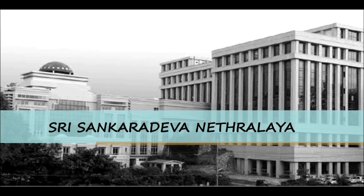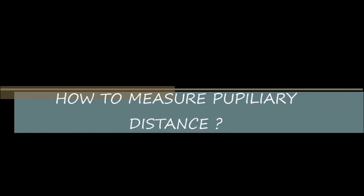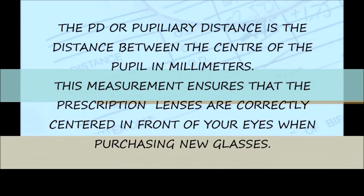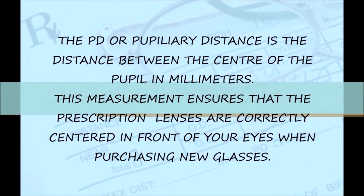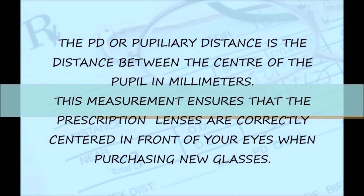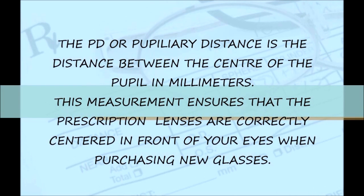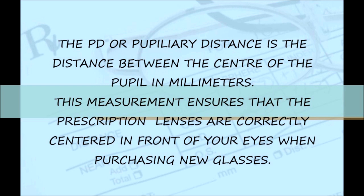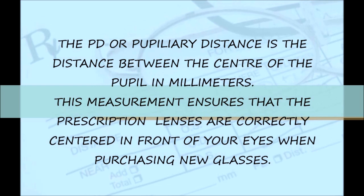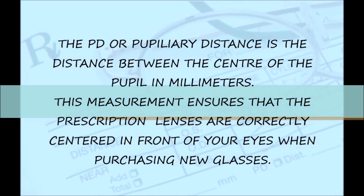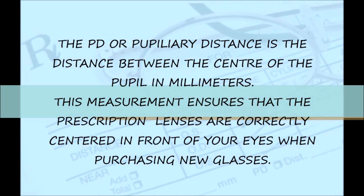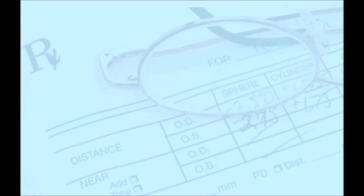Hello everyone. In this video, we are going to show you the different ways of measuring a pupillary distance. The PD, or pupillary distance, is defined as the distance between the center of the pupils in millimeters. This measurement ensures that the prescription lenses are correctly centered in front of your eyes when purchasing new glasses.